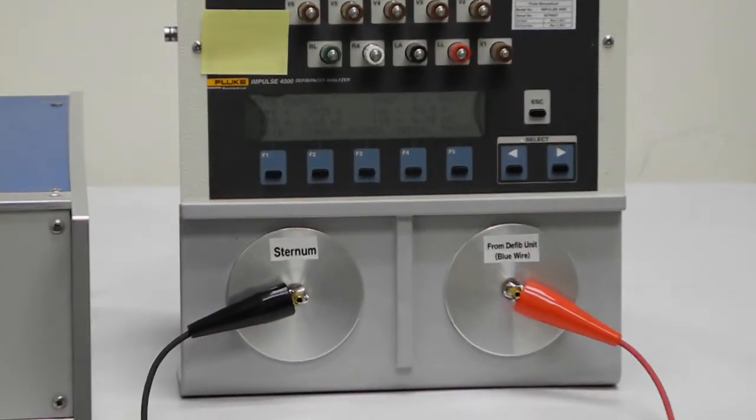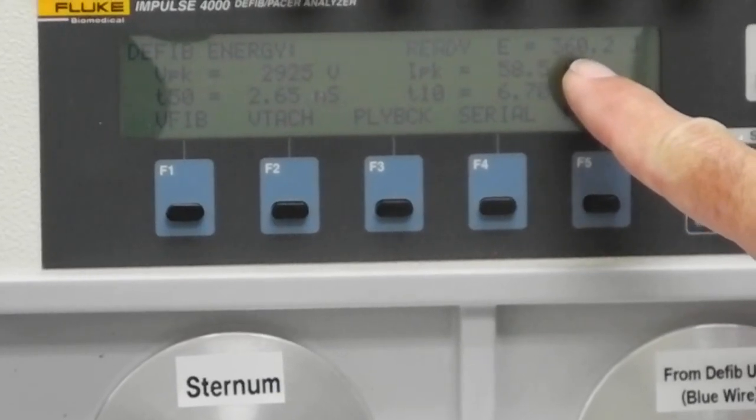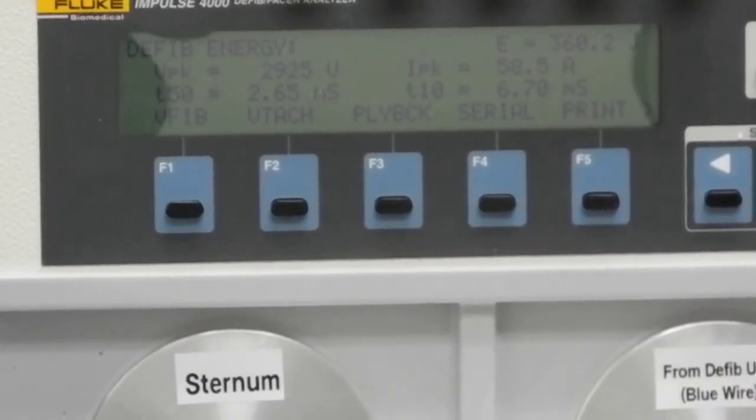And now, looking at the Impulse 4000, we see the energy directly read as 360.2 joules.